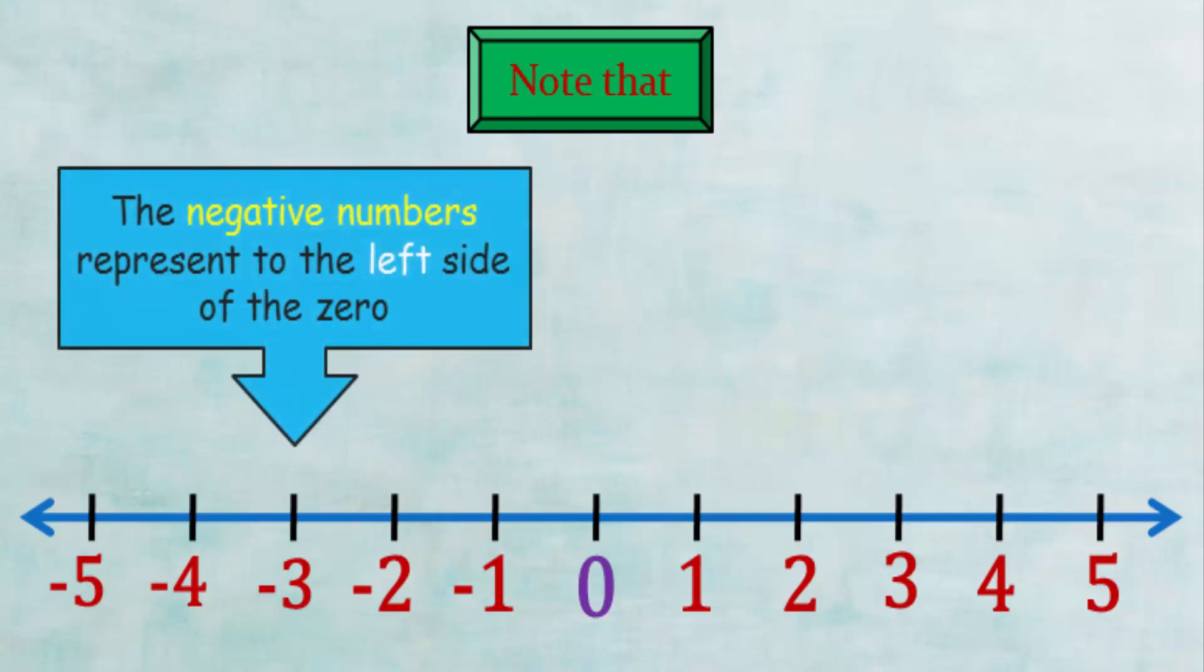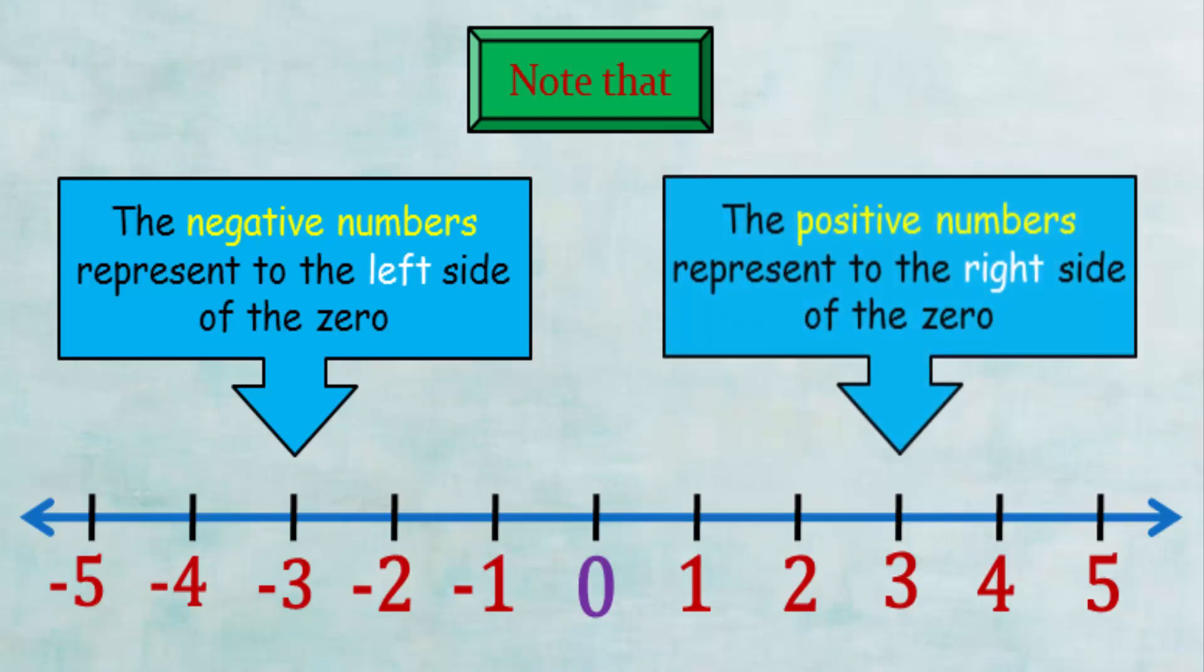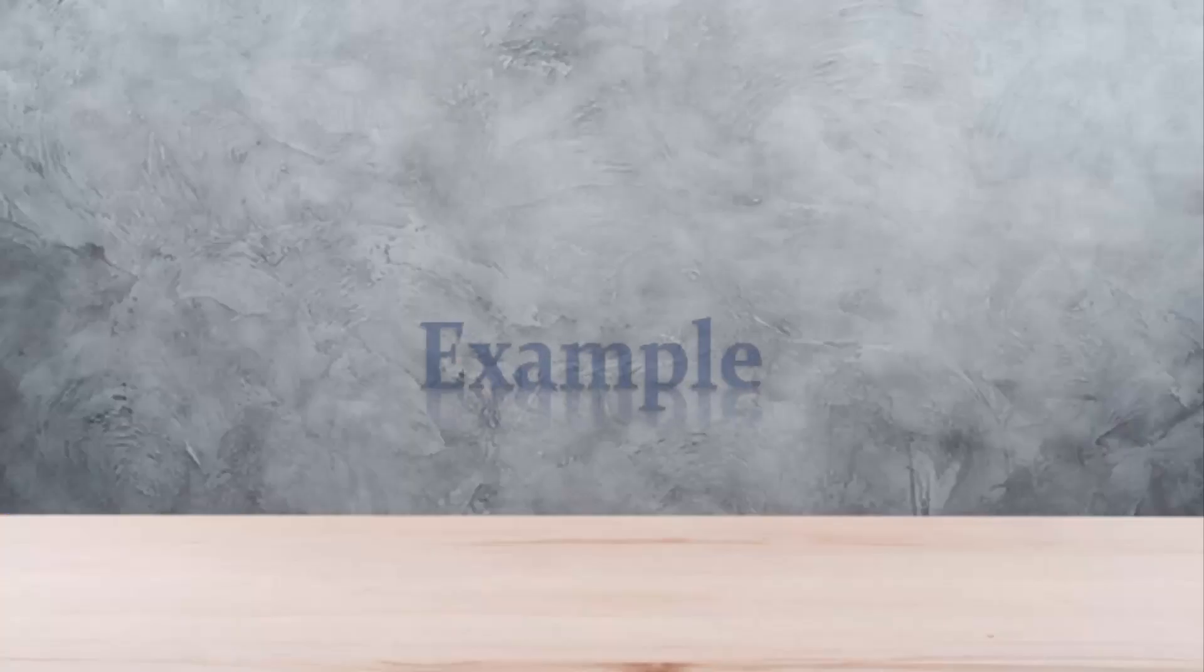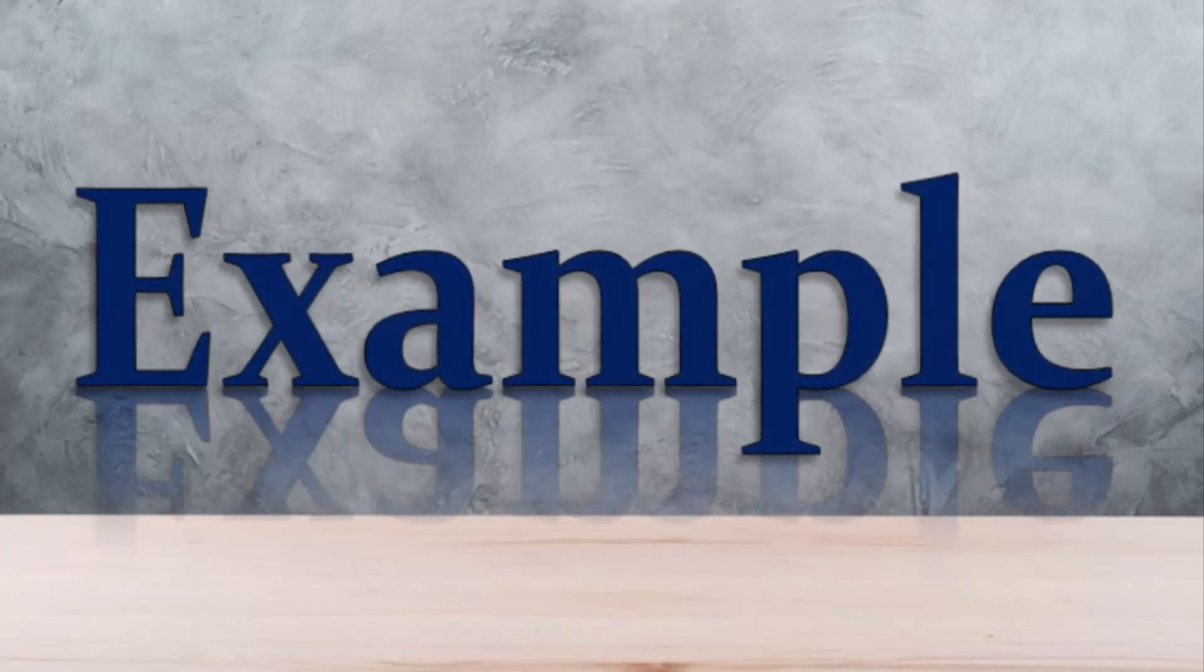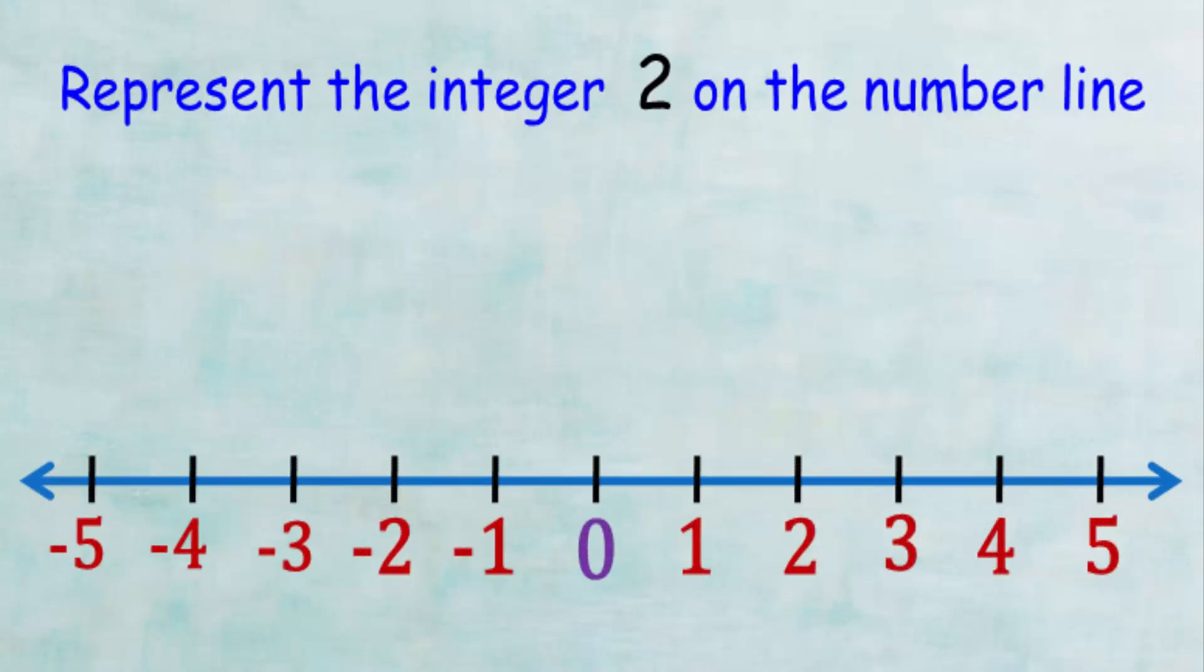Let's take an example. In this example we want to represent the positive number 2 on the number line. First, we draw the number line and write the negative numbers on the left and the positive numbers on the right and zero in the middle.